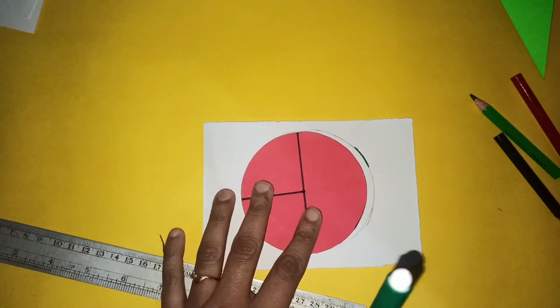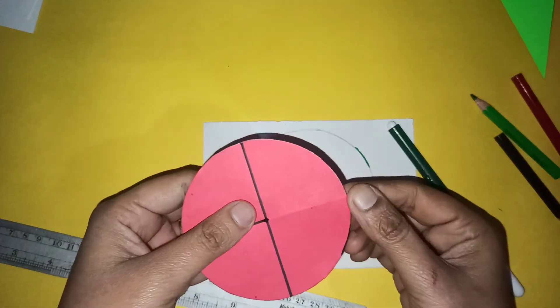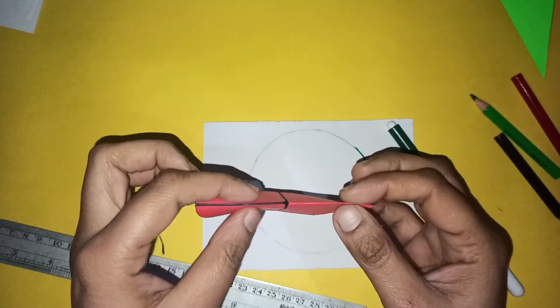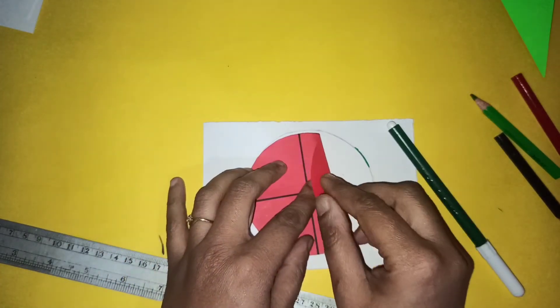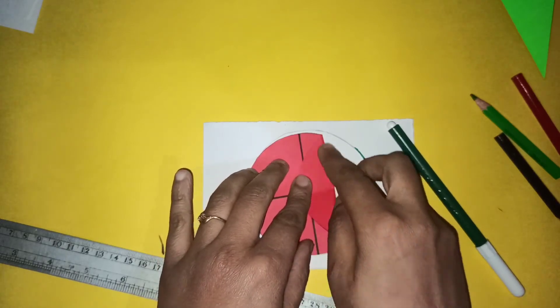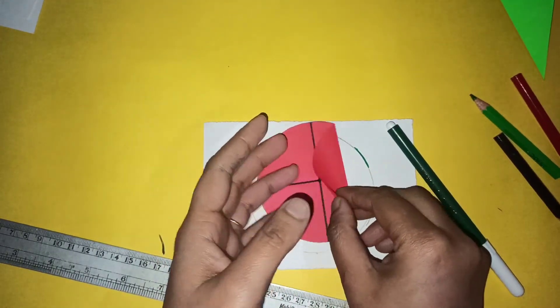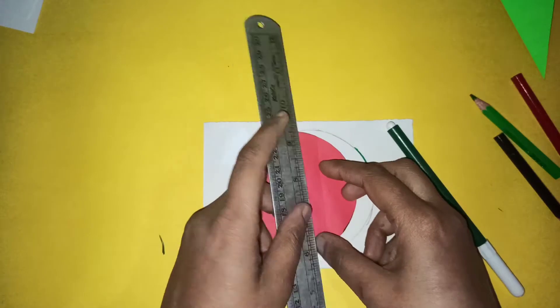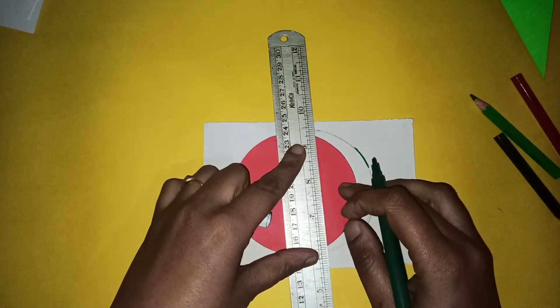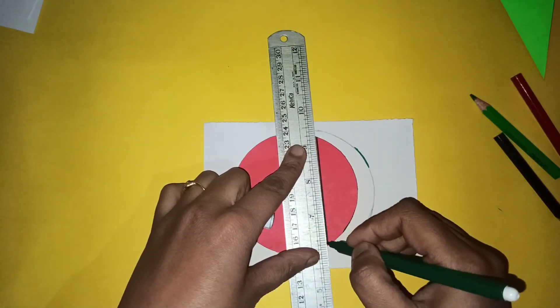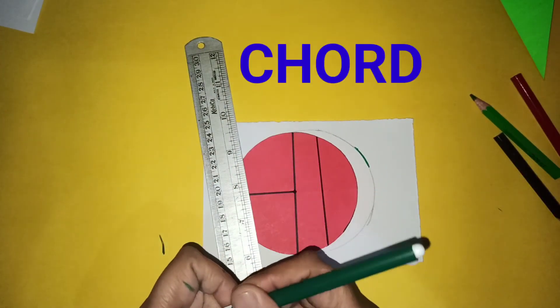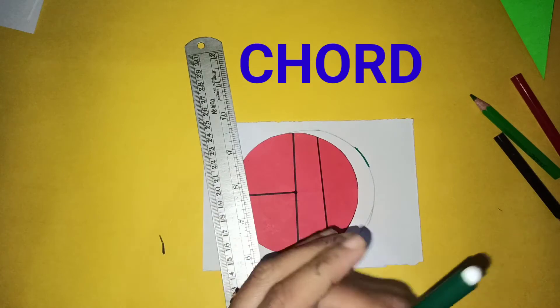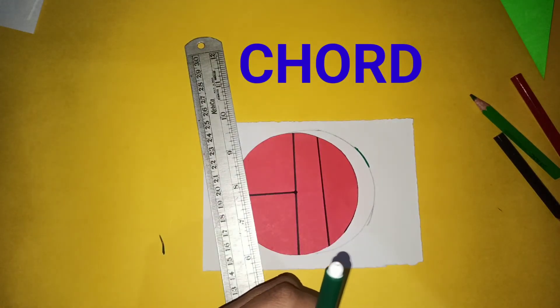Now I was folding in such a way that the fold passed through the center. But if I fold it in such a manner that it is not passing through the center, anywhere I make a fold, I get another line. Yes, this line also has a special name. First let me draw it. It is called a chord. So any line that cuts the circumference at two points is called a chord.